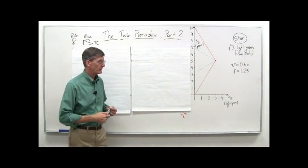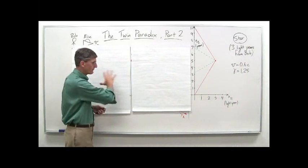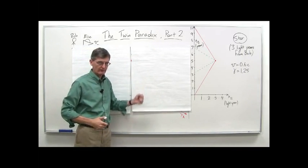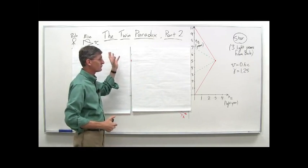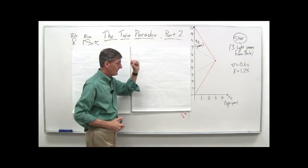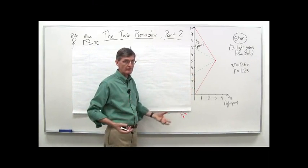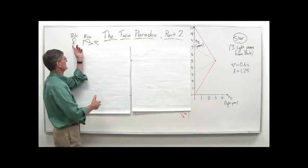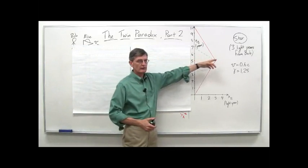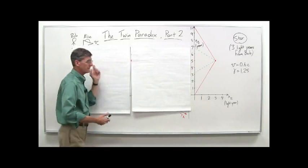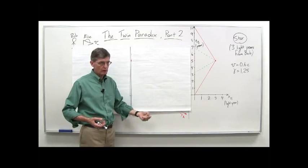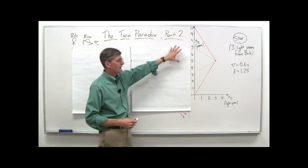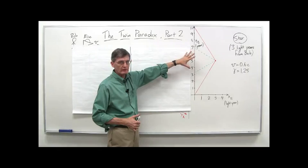We've set up the twin paradox. This is twin paradox part two. Remember how we set it up — the paradoxical part is that both Bob and Alice: Alice takes her trip to the star three light years from Bob and then back again. Both of them see the other's clocks running slow, time dilation as we've done a number of times before. But when they get back, Alice is younger than Bob.